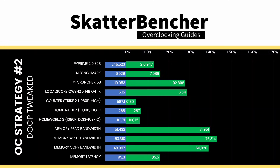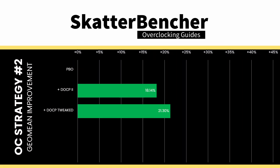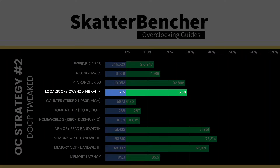We re-ran the benchmarks and checked the performance increase compared to the default operation. The motherboard auto rules for DOCP1 and DOCP tweaked don't make a big change to the memory timings, so we don't expect a huge change in performance, though reducing waiting times to issue commands and access refreshed memory cells does help a bit. The GeoMean performance speedup improves by another three percentage points, and we get a maximum benchmark improvement of plus 28.93% in local score.